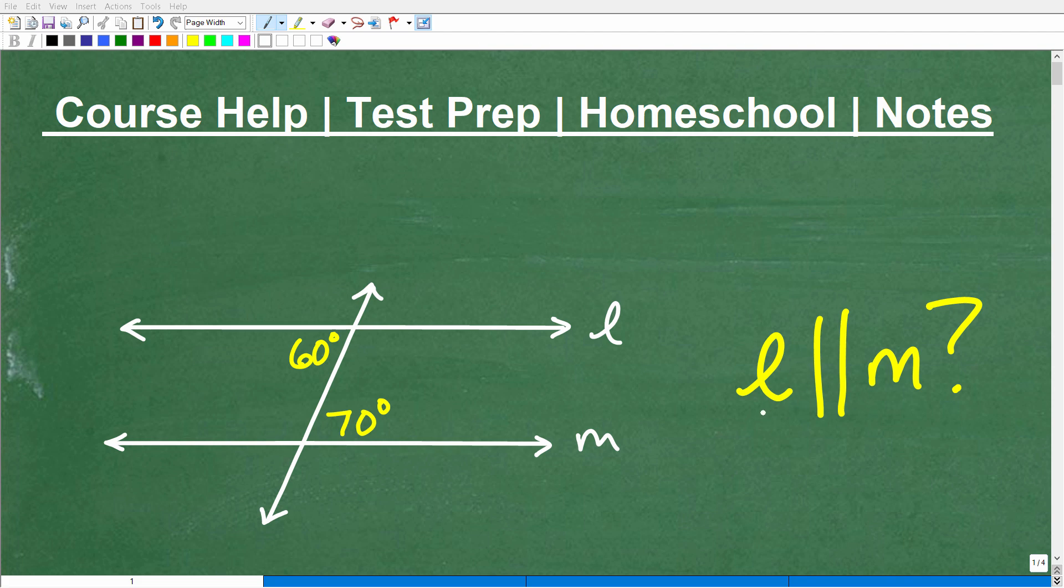Okay, let's go ahead and determine whether line L and M are parallel. So in geometry, one way we can express parallel lines is we actually state the name of the line. So this right here, L, is representing this line, or this is the notation that represents this line. So we'll call this line L.